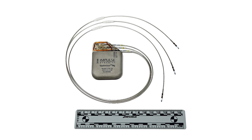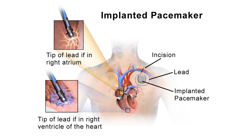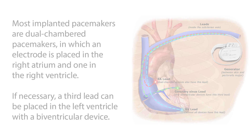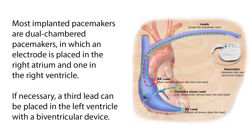Permanent pacemakers are used to treat various bradycardiac arrhythmias and are implanted during a brief surgical procedure, usually under local anesthesia. The electronic control center, called the pulse generator, is encased in titanium with a lithium iodide battery inside that lasts 5–12 years. The pulse generator is attached to one or more lead wires threaded through large blood vessels in the upper chest into the heart. Small electrodes at the ends of the leads attach to the inner surface of the heart, pick up the heart's natural electrical signals, and deliver the pacing pulse from the generator. The pulse generator is usually placed under the skin below the collar bone. Most implanted pacemakers are dual-chambered, with an electrode in the right atrium and one in the right ventricle. If necessary, a third lead can be placed in the left ventricle with a biventricular device.